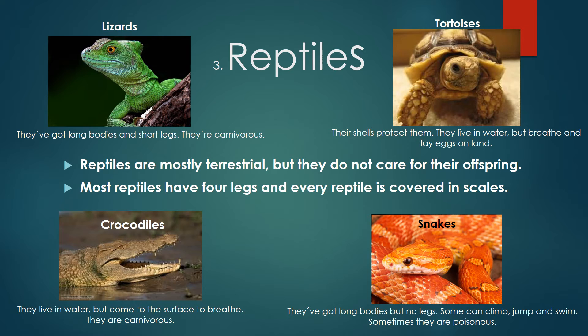Lizards have long bodies and short legs; they are carnivores. Tortoises — their shells protect them. They live in water but breathe and lay eggs on land.